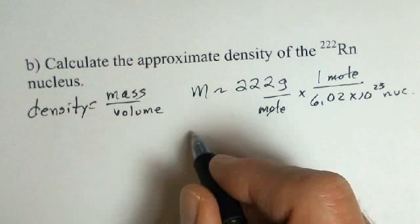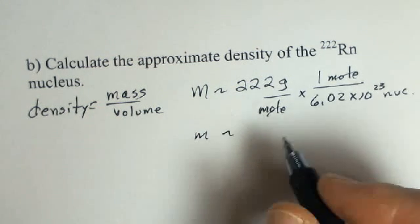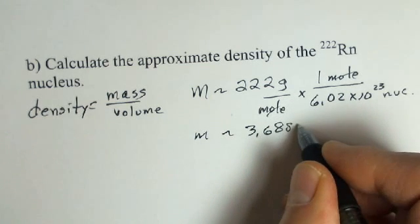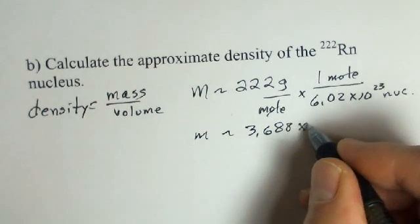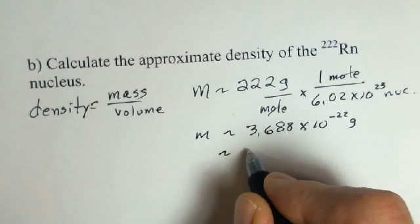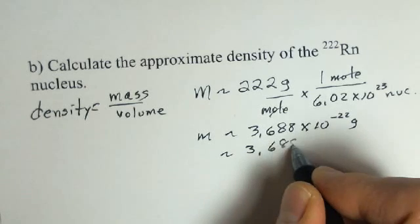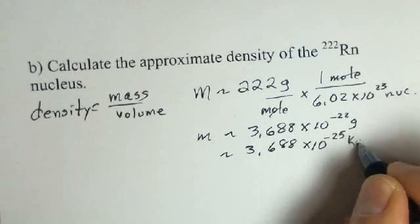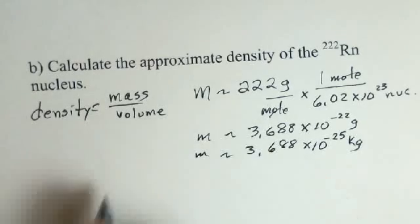And our mass number is about 3.688 times 10 to the minus 22 grams. Or if we go to standard units, the kilograms, 3.688 times 10 to the minus 25 kilograms. So, we've done the mass.